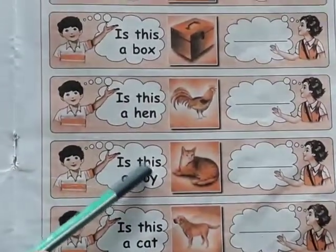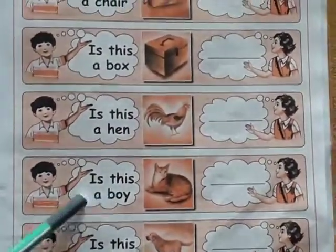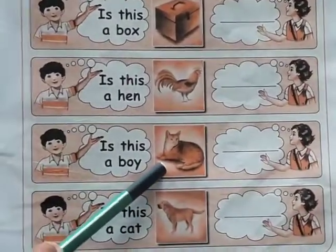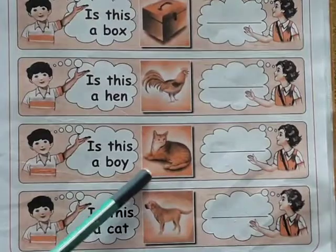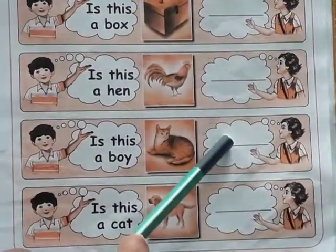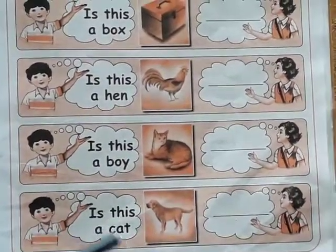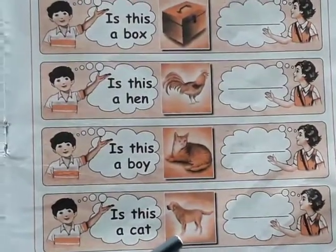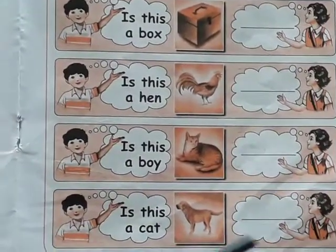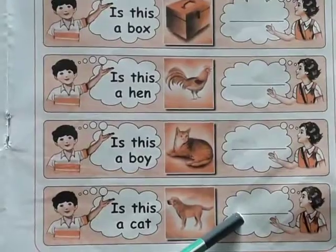Next: Is this a boy? This is a picture of a cab — No. Write: 'No, this is not' or 'It is not.' Next: Is this a cat? This is a picture of a dog, not a cat — No. Write: 'No, this is not' or 'It is not.'